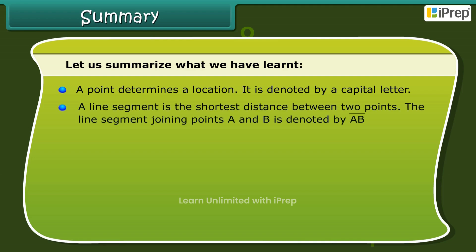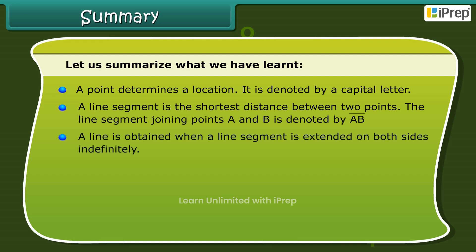A line segment is the shortest distance between two points. The line segment joining points A and B is denoted by AB. A line is obtained when a line segment is extended on both sides indefinitely.